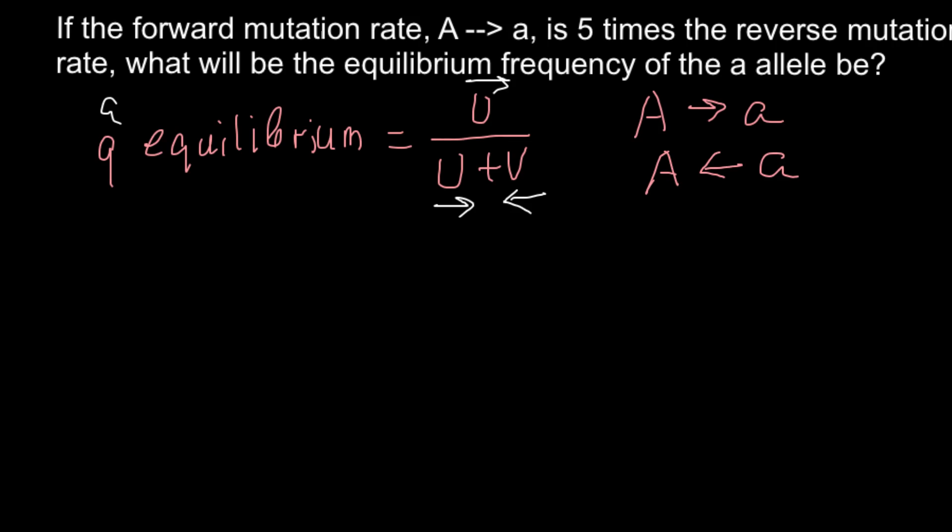And as you see, this particular reaction would be 5 times greater than reverse. So, we can say that U would equal to 5V, and this is going to be V.